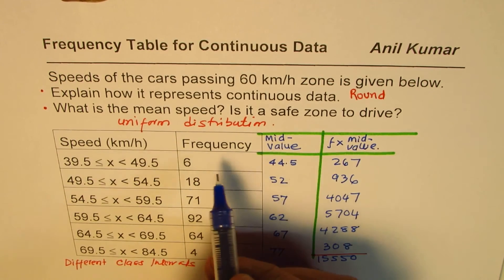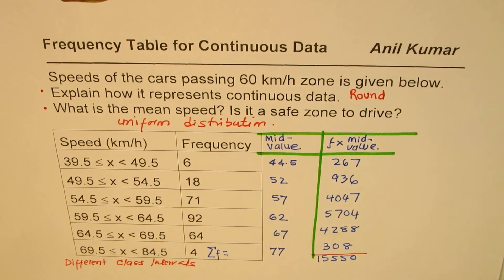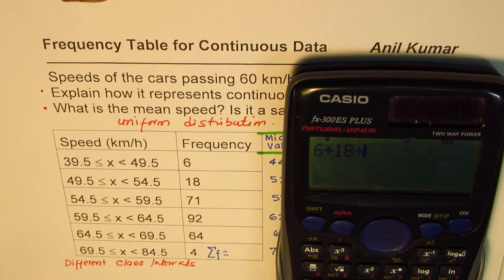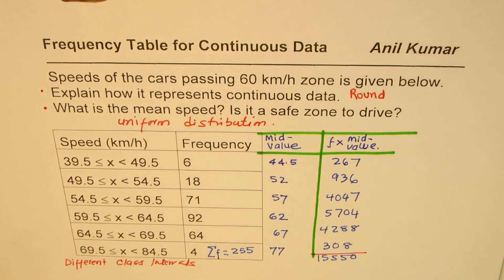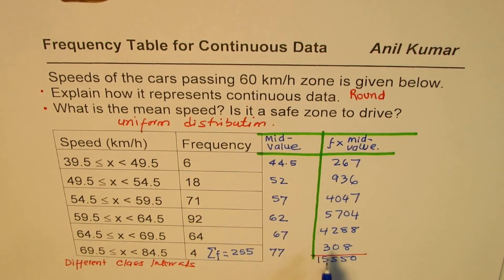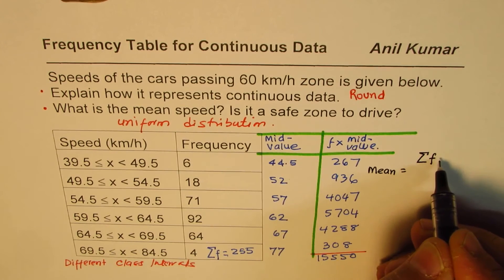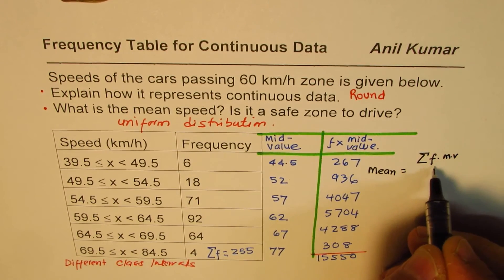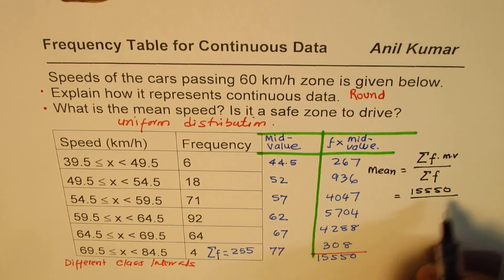Let's also find the sum of frequencies: 6 plus 18 plus 71 plus 92 plus 64 plus 4 equals 255. So the speed of 255 cars was checked within this 60 kilometers per hour speed zone. Now we'll find the mean speed. Mean equals sum of frequency times mid value divided by sum of frequency, which is 15550 divided by 255.